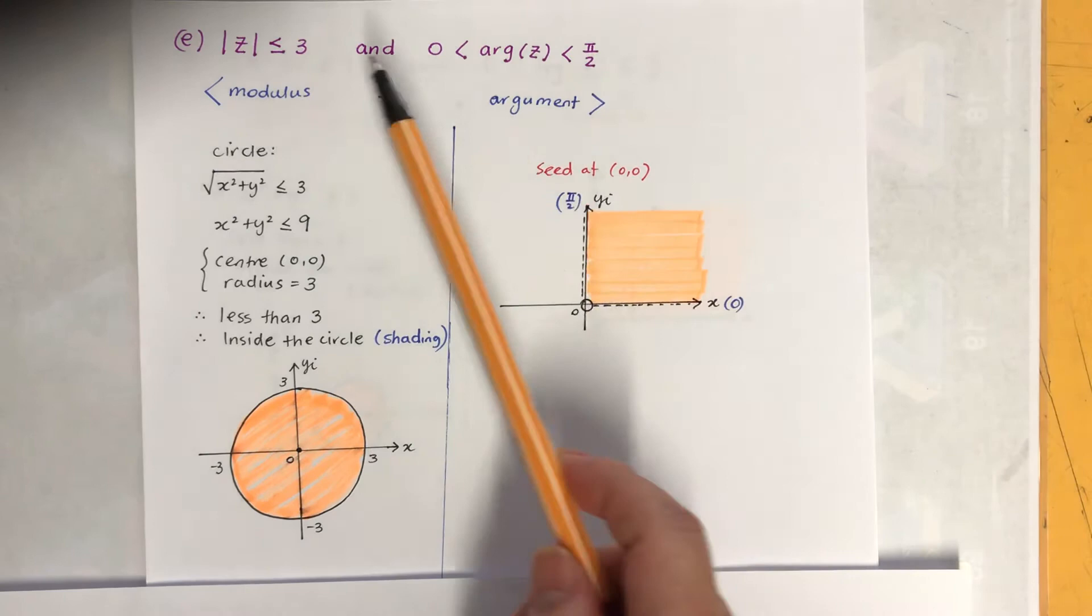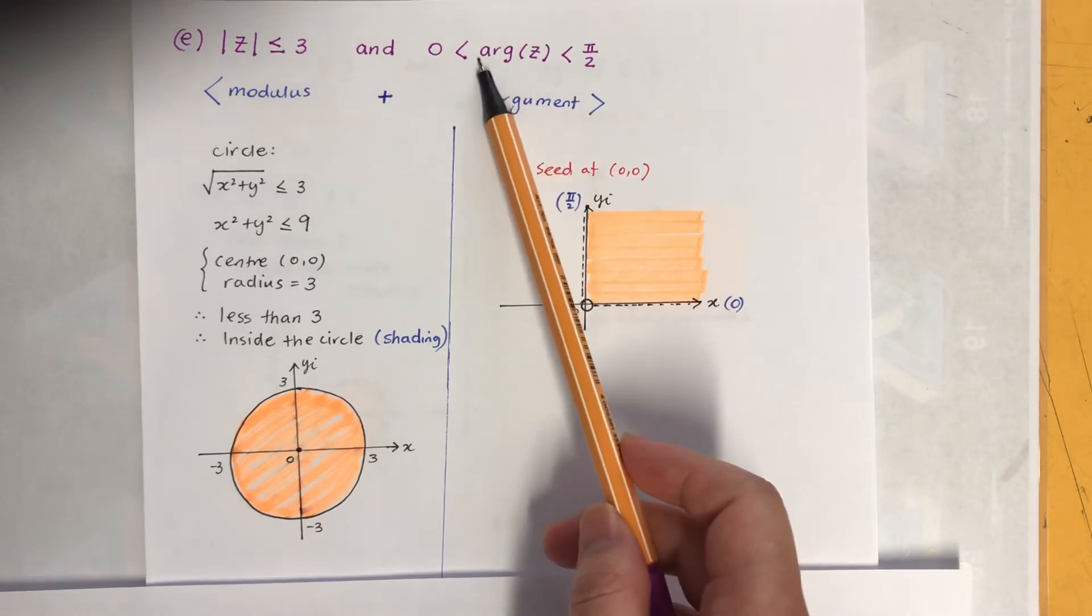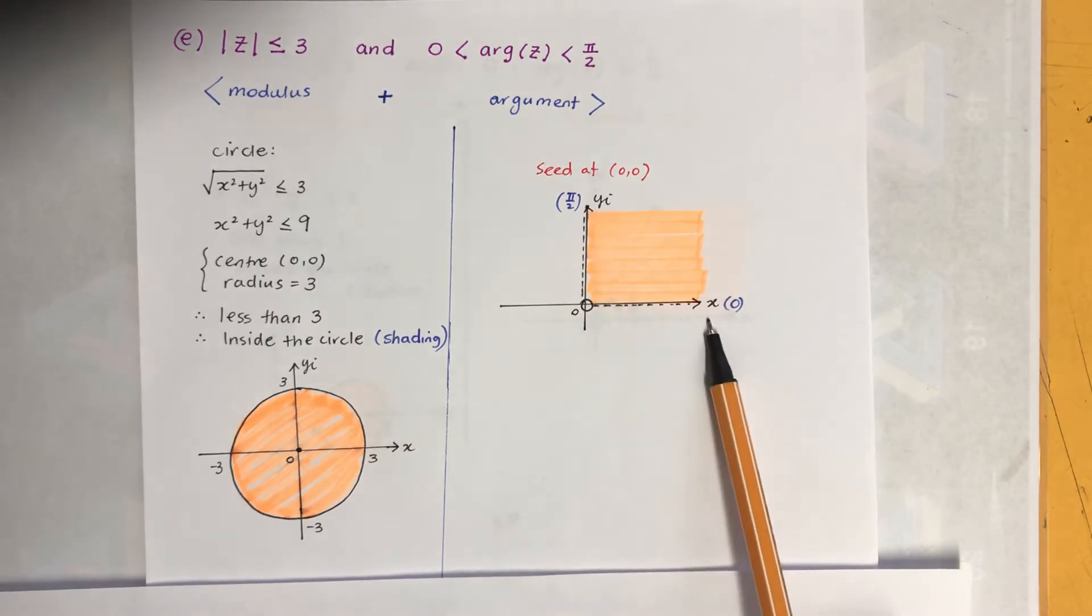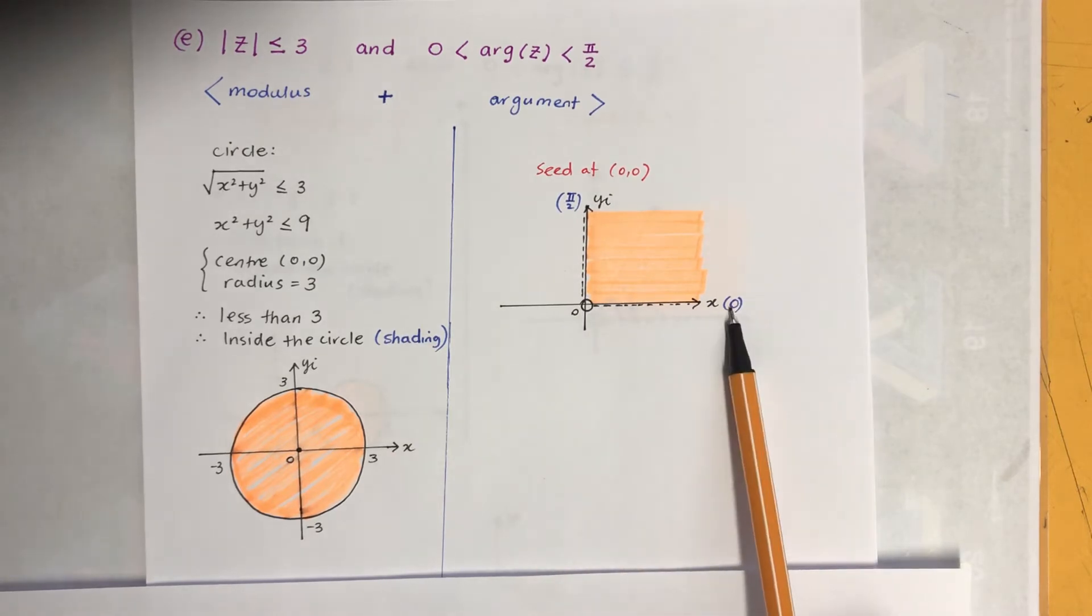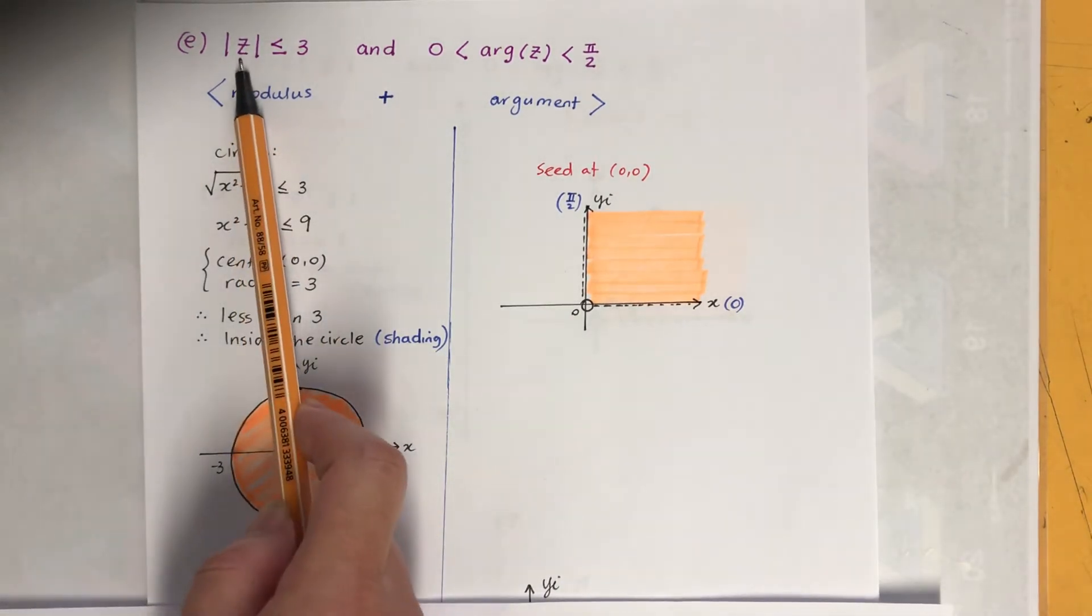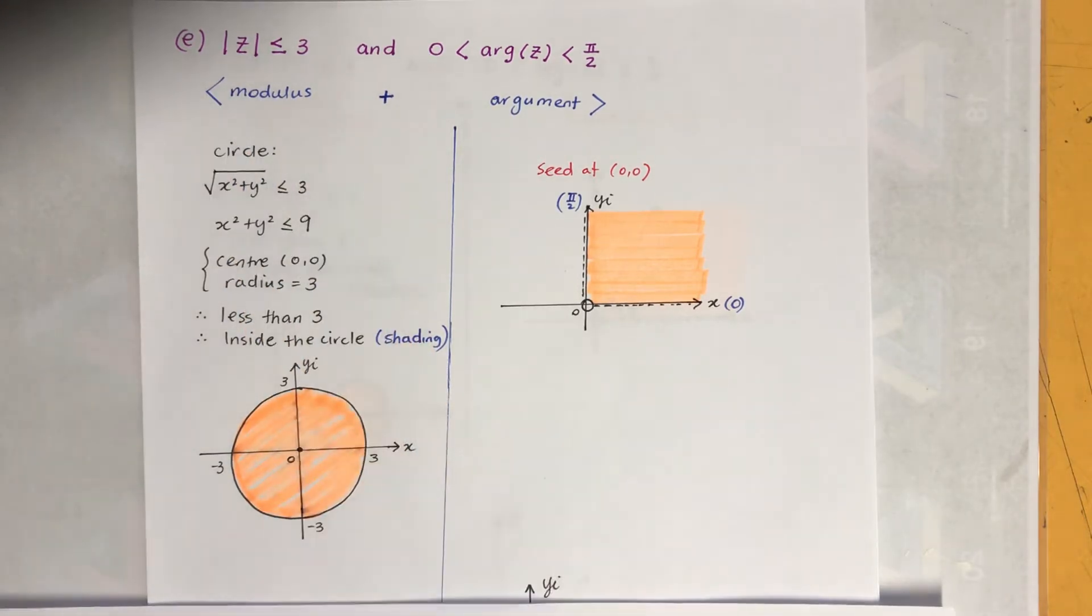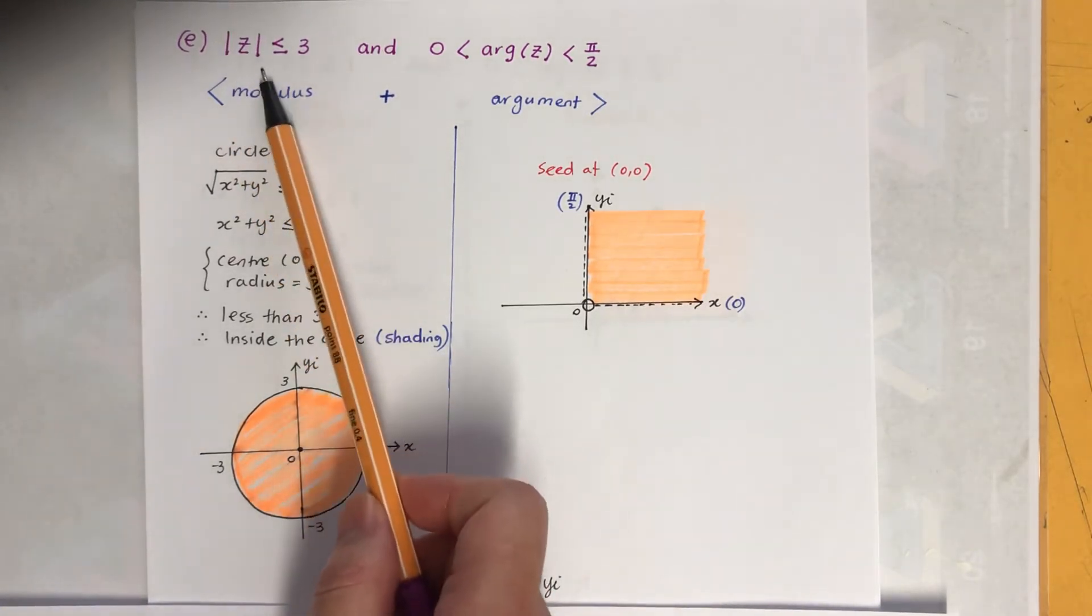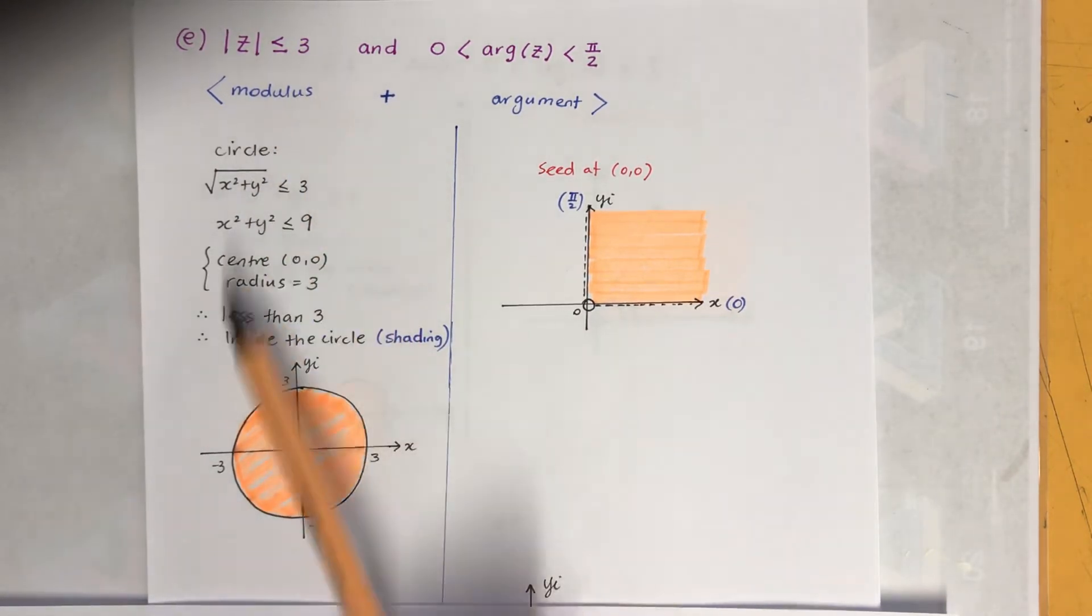So argument is always a little bit easier. The argument is going from zero to pi over two but they're not included so it'll be broken line. And the seed at zero zero obviously, so it's an open circle there. Now here, that's the X squared plus Y squared, automatically by now you should remember that. So that's circle with the center of zero zero and radius three. Now the circle is less than three so it's going to be inside a circle.